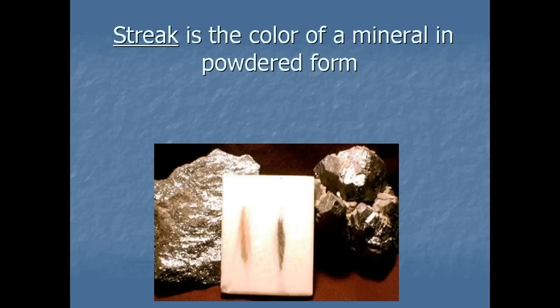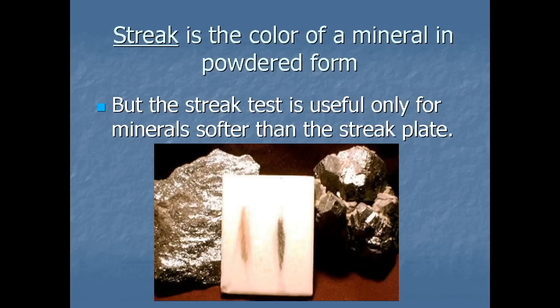Streak is the color that a mineral makes in powdered form. You scrape the mineral across a white streak plate, and whatever color comes off is the mineral breaking apart into powder. This is another way to identify minerals, since they don't always look the same when streaked. However, the streak test only works if the mineral is softer than the streak plate — if it's harder, it will cut the plate and no powder comes off.